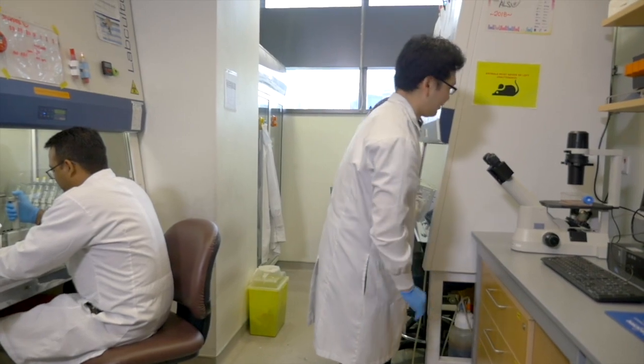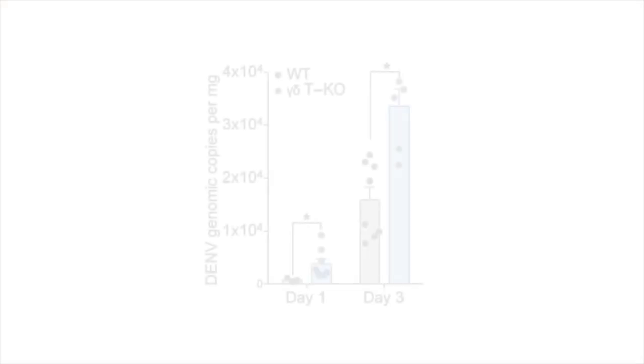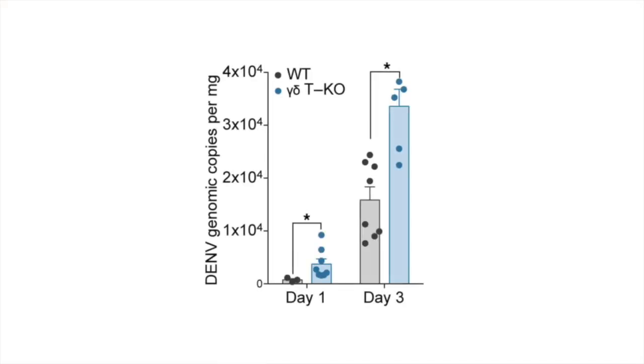To really confirm the importance of Gamma-Delta T-cells in clearing infection, we also used mice that were genetically deficient in Gamma-Delta T-cells. As you can see in this key figure, after dengue infection, these mice had much higher levels of virus in the skin, showing that Gamma-Delta T-cells are important for early host defense against dengue.